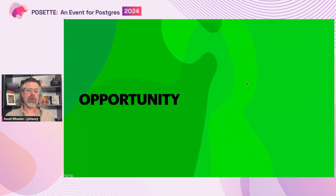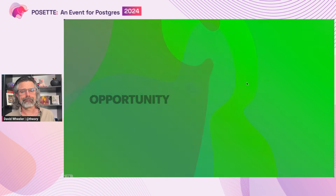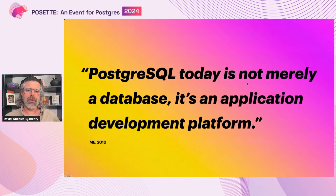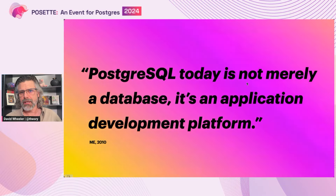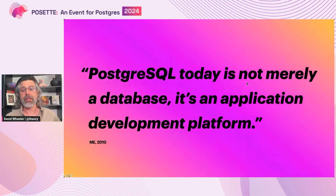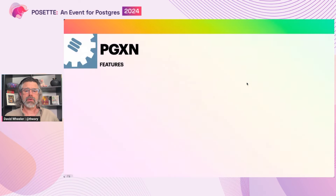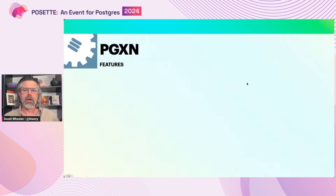This new infrastructure created new opportunities for the extensibility of Postgres. I was pretty excited about the possibilities around that time, publicly claiming that PostgreSQL today is not really a database — it's an application development platform. As a result, I proposed to create PGXN, a service for distributing Postgres extensions, with the goal to be the canonical source for all publicly available extensions.